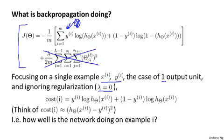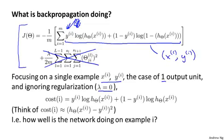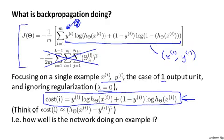If you look inside this summation, you find that the cost term associated with the i-th training example, that is the cost associated with training example xi, yi, that's going to be given by this expression. The cost of training example i is written as follows. And what this cost function does is it plays a role similar to the squared error.